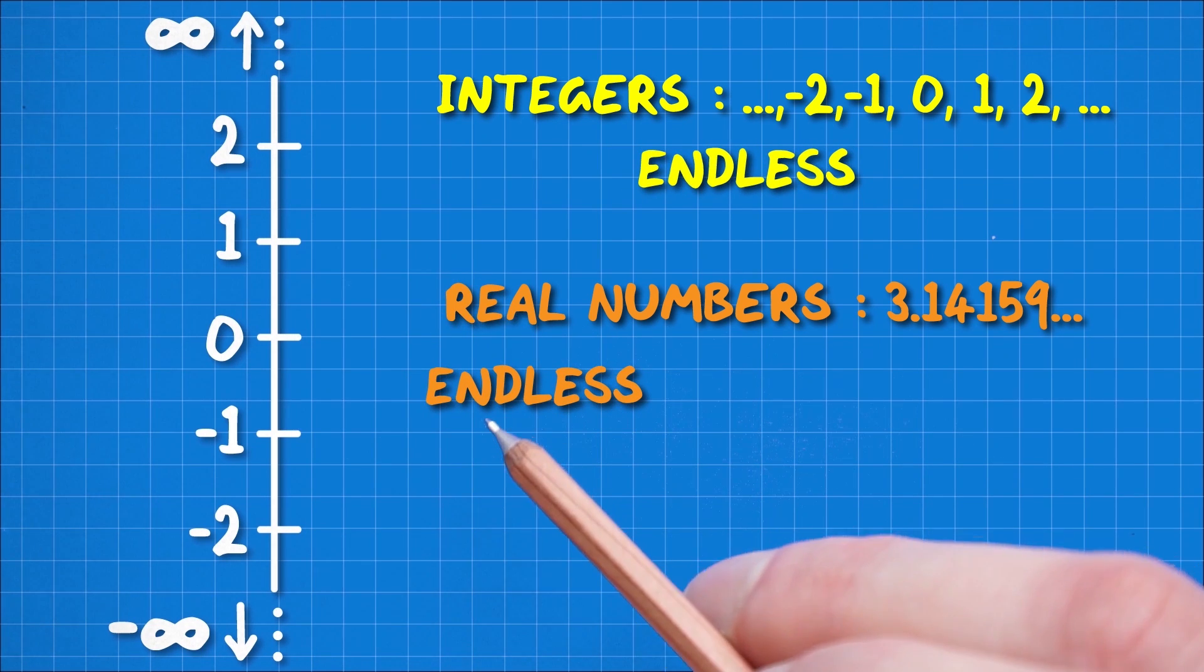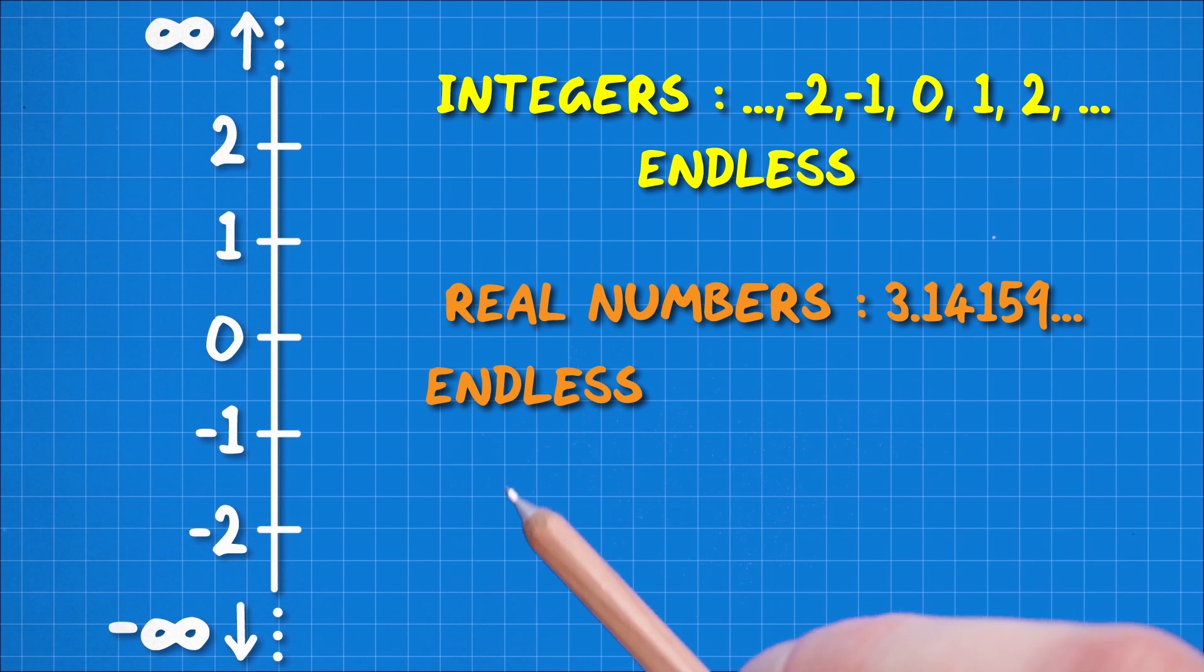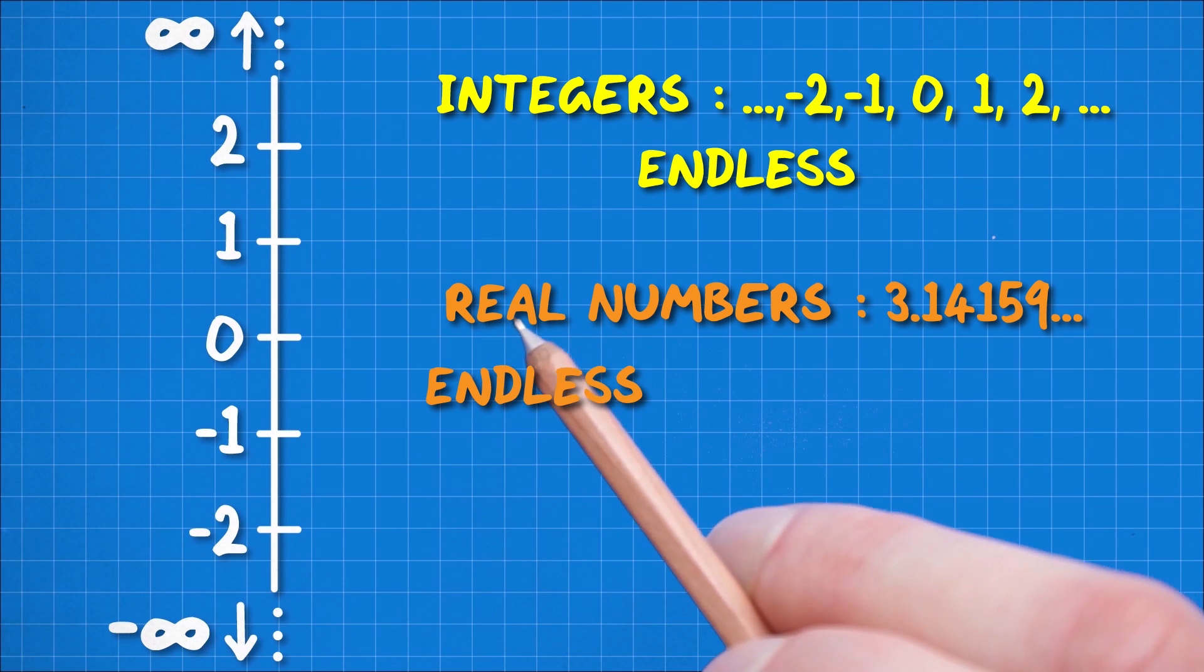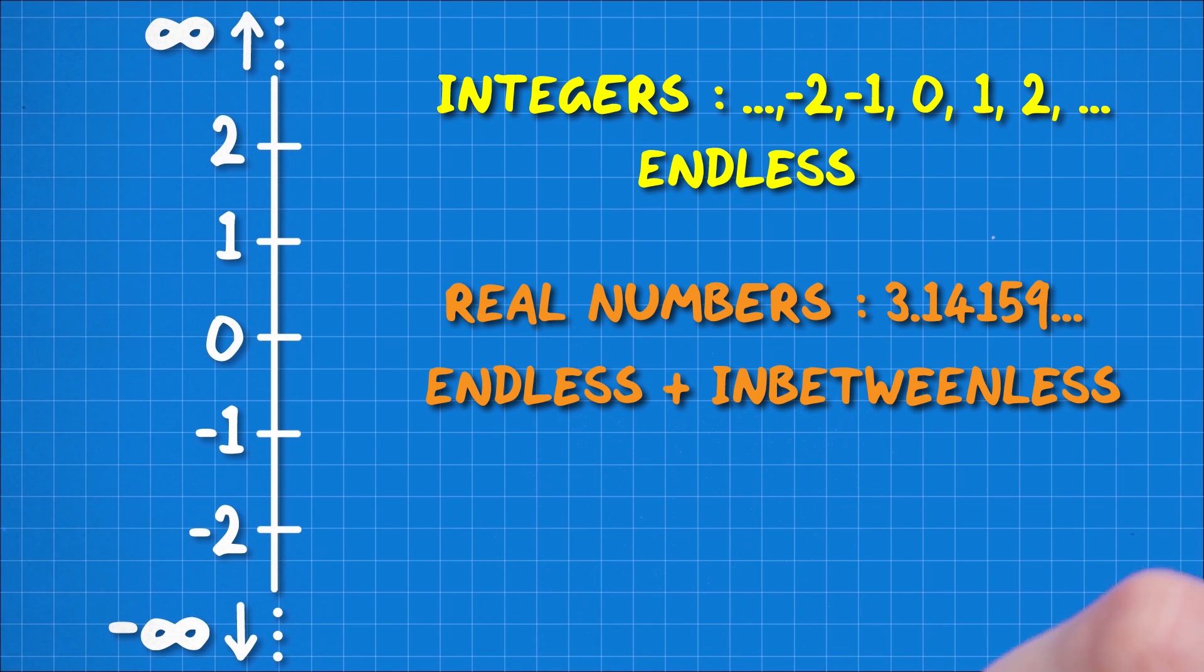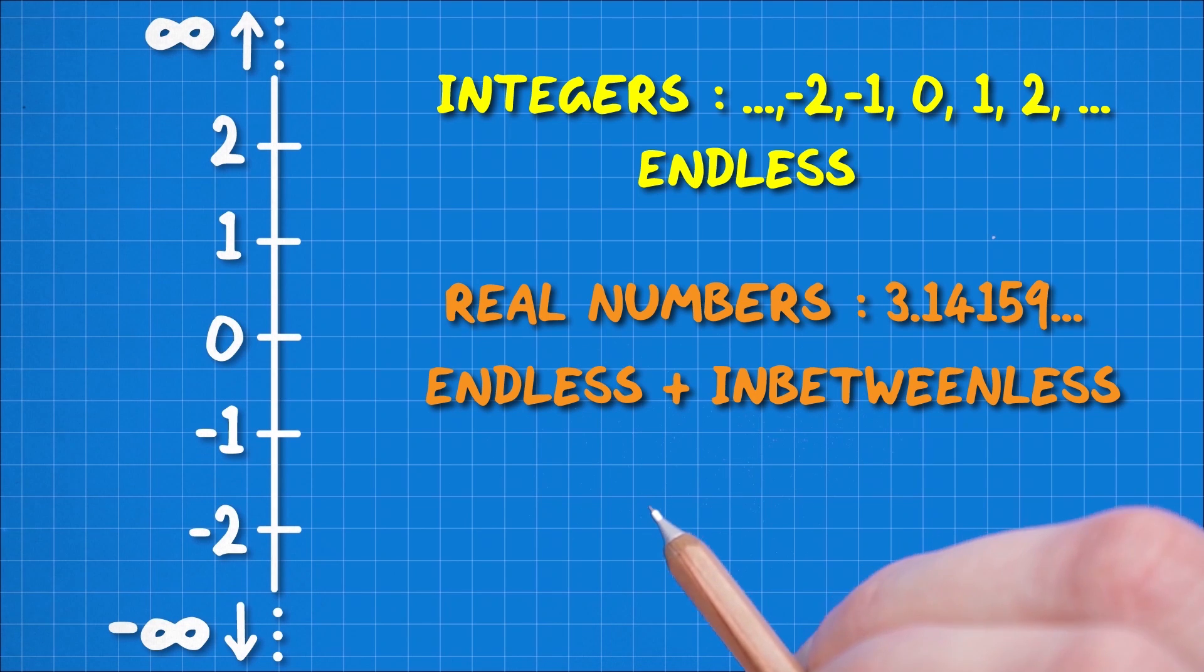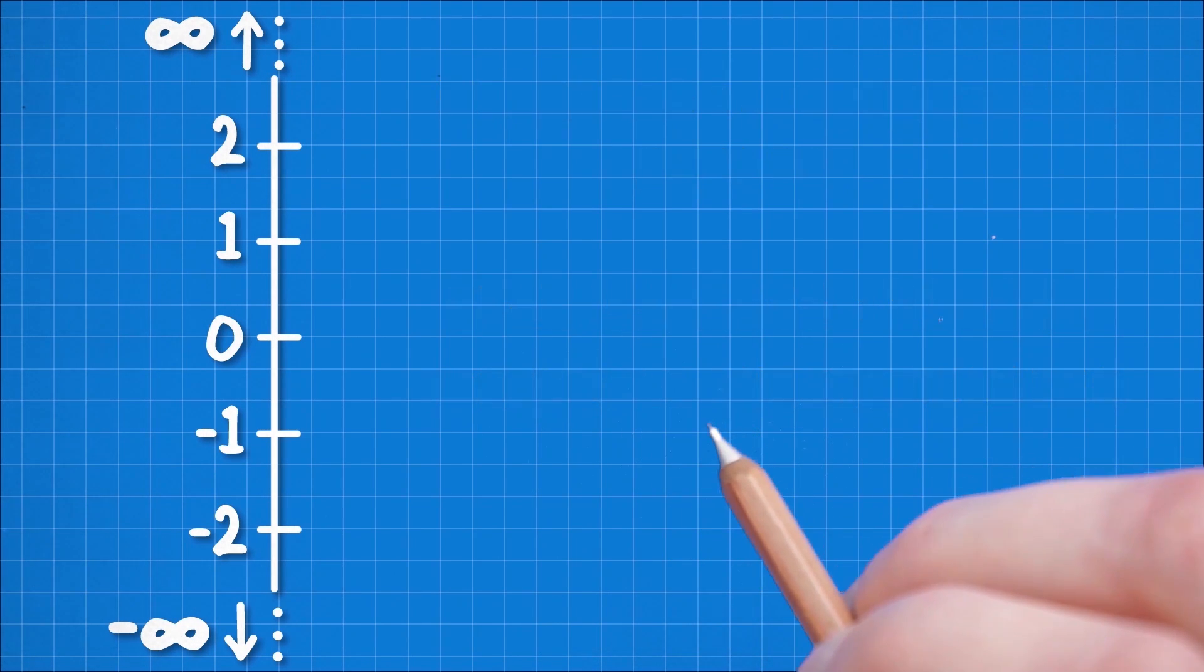Well, the trick is that the integers are just endless, whereas the real numbers are endless and in-between-less. Now, in-between-less is just a word that I've made up. It's not a technical description, but I feel like it's a useful concept to put a label on. To get your head around this, let's just do a simple thought experiment.